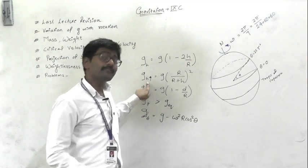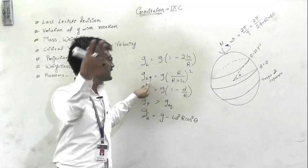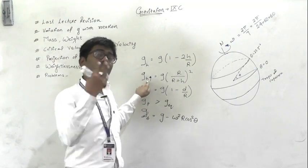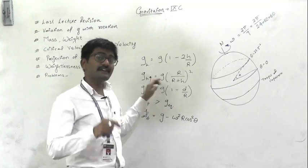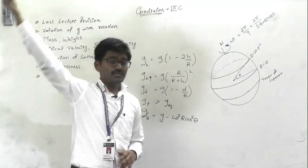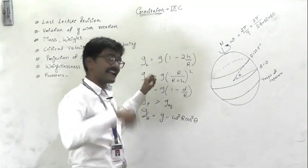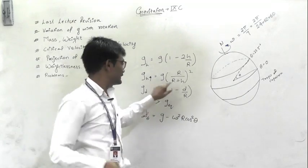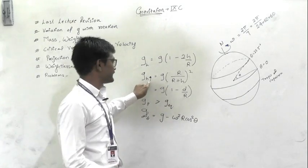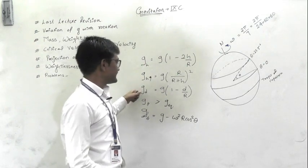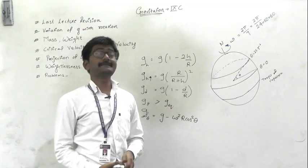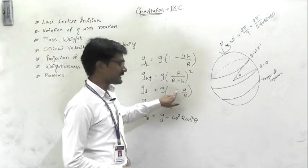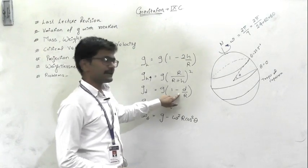This formula is used for considerably higher heights, like 3000 or 4000 kilometers, when satellites are launched at very high heights. In those situations where the height is considerably high, you use this formula. And for depth, when you go deep into tunnels, at that time you use the depth formula.